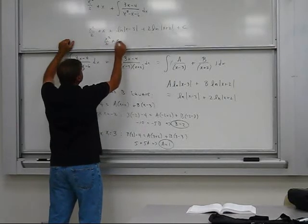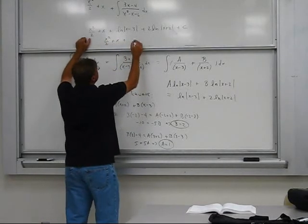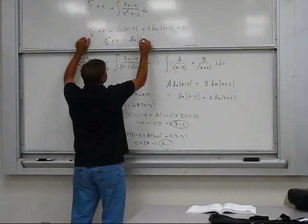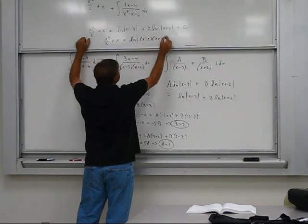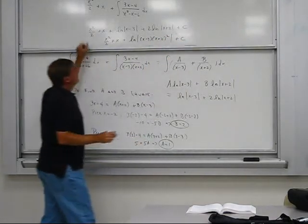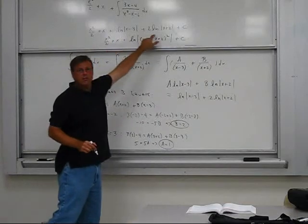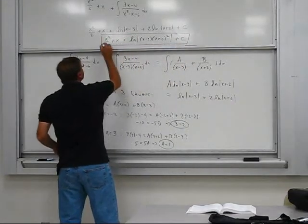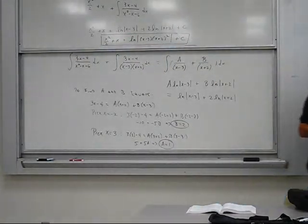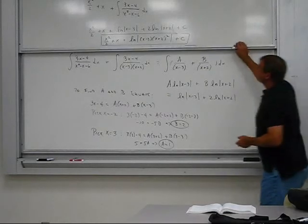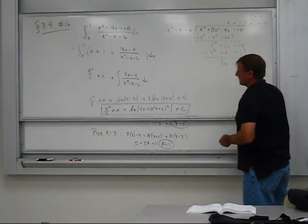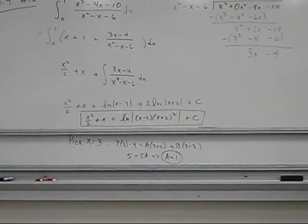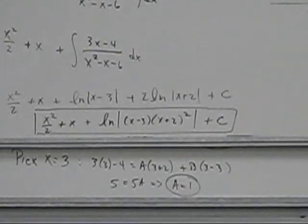And that's the final answer. And the book may put it in this form. They may say x squared over 2 plus x plus ln of x minus 3 times x plus 2 squared. And I put it like that, and that's just using the law of logarithms where you multiply. So here's your answer. Okay. Thank you.